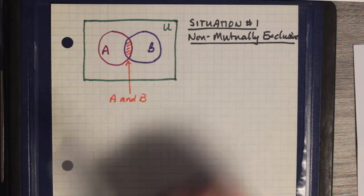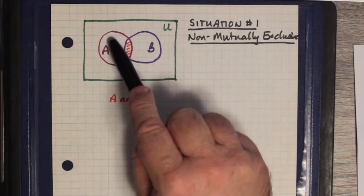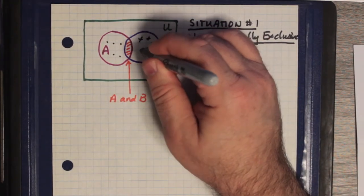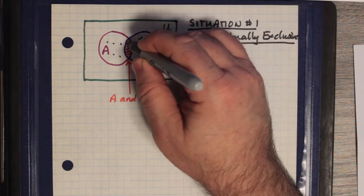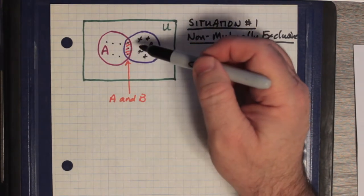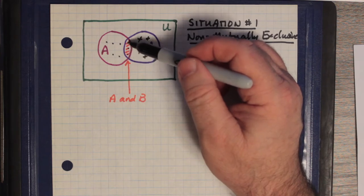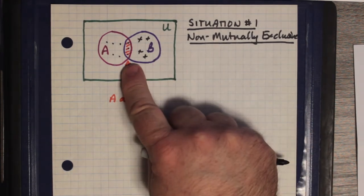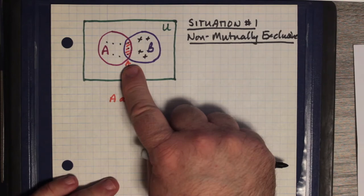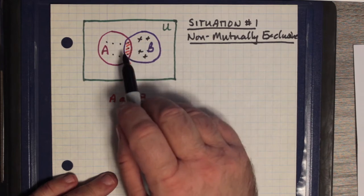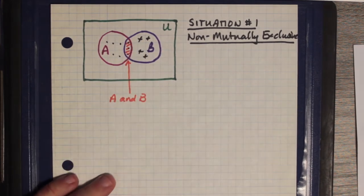Elements which are in set A belong to set A, and elements which are in set B belong to set B. But there are some elements that have the features of both set A and set B. Let's suppose, for example, that we have odd numbers here and multiples of 3 here. Multiples of 3 that are odd would then belong in the intersection between A and B. For situation number 1, that's what this is—the non-mutually exclusive case, where we have sets A and B that cannot be separated because there are members that the two sets have in common.